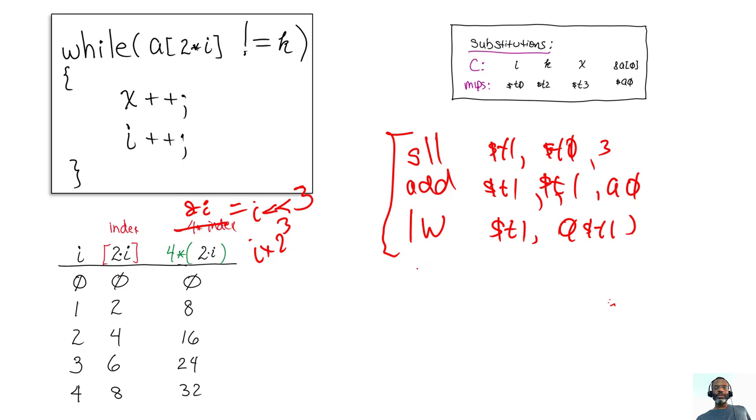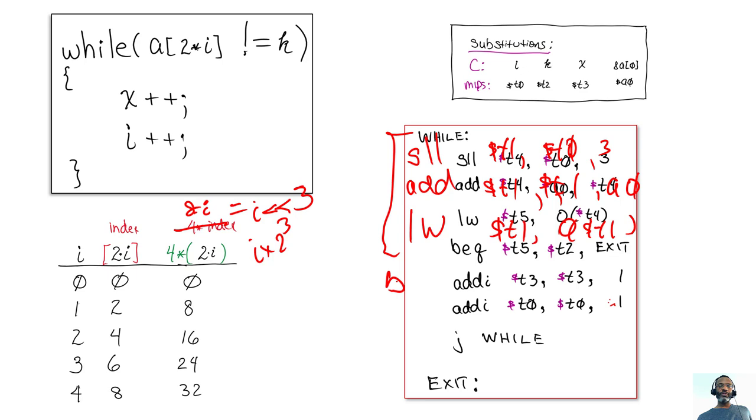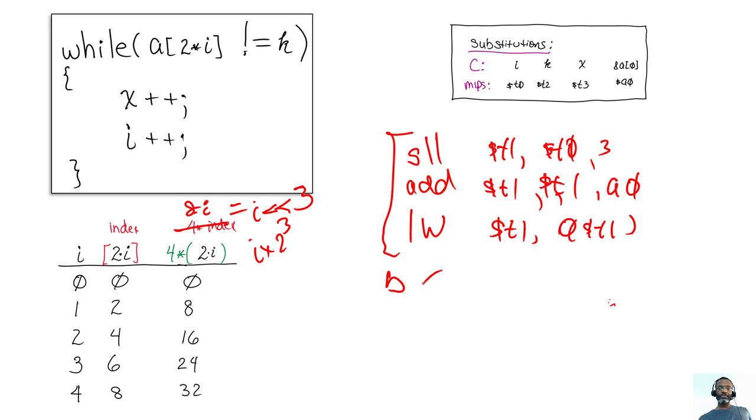And what I want to do is compare him to k. So it looks like it's a not equals. It's typically with the while loop, it's more efficient to do the opposite of whatever that statement is. So I'll do a branch if equals. So branch if equal. And I'm going to compare t1 to t2. And if those two are equal, then I don't want to do anything. I want to get outside of that while loop and just exit. So if they're equal.